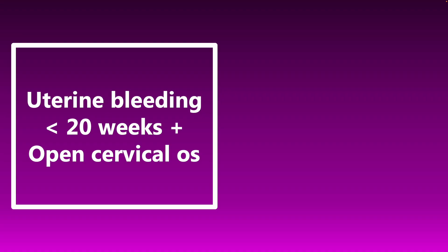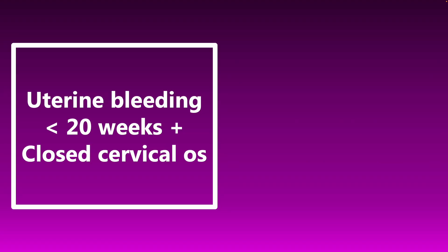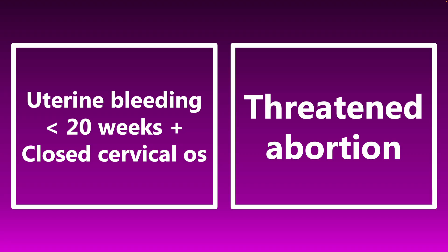If you have uterine bleeding less than 20 weeks plus an open cervical os, think inevitable abortion. These categorizations can be tricky — with an open cervical os, no products of conception have been expelled yet, but because the os is open, this is unfortunately inevitable. On the flip side, uterine bleeding less than 20 weeks with a closed cervical os is a threatened abortion — the os is closed and products of conception may not be expelled, but there is a real threat this could happen.